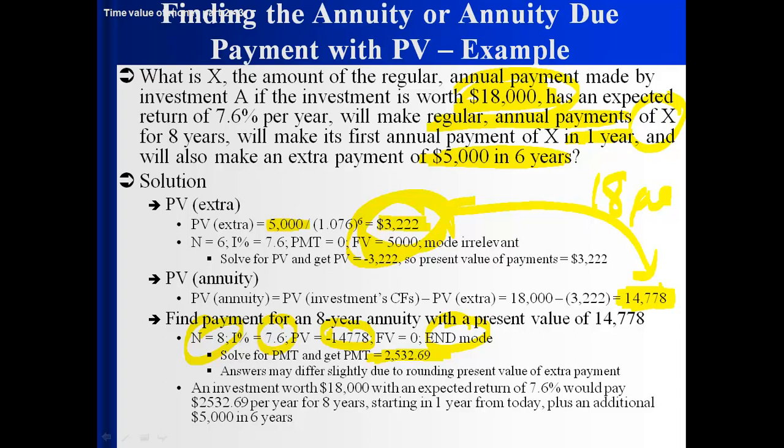Each payment is $2,532.69. So $2,532.69 in years one through eight, plus $5,000 in year six — take the present value of all those and add them up, and you get $18,000.